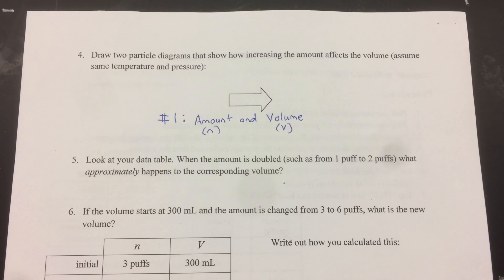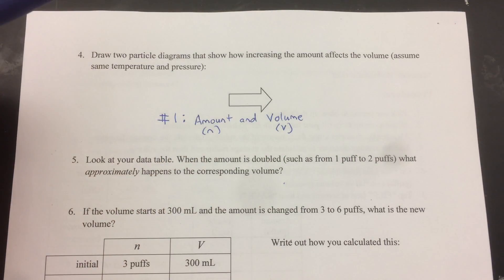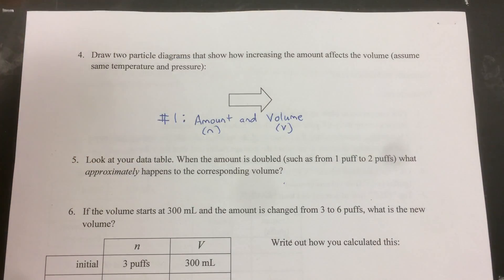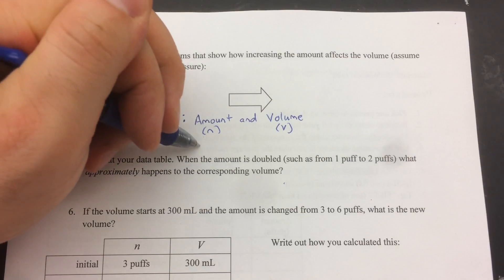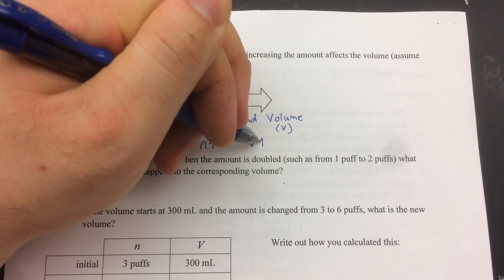So this is for the first experiment that you did, where you blew up the balloon, and we looked at the effect of amount, represented as N, on volume, represented as V. This is a direct relationship. The more air you put into the balloon, the bigger it gets. So as N increases, volume increases.